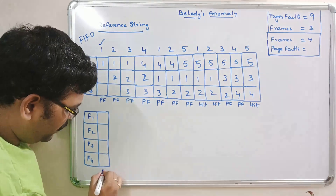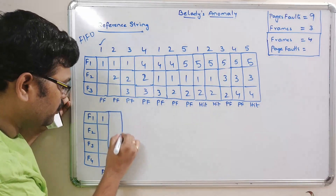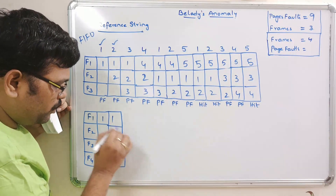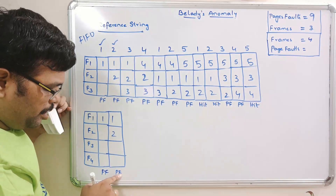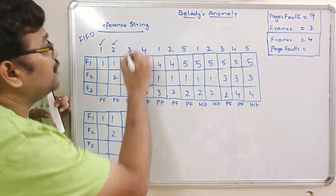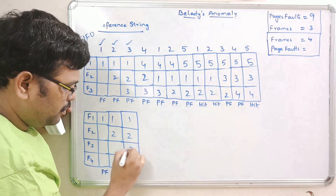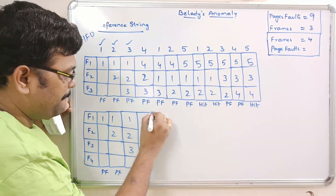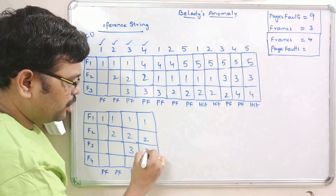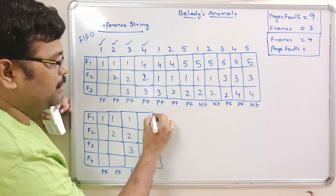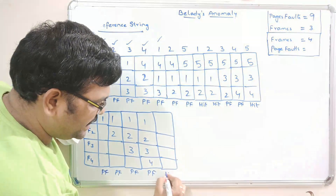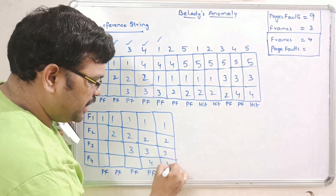Page 1 is not available — page fault. Page 2 is not available — page fault, loaded into memory. Page 3 is also not available — page fault. Page 4 is also not available — page fault. Now all four frames are filled. Page 1 is already there — hit, no change. Page 2 is also available — hit.